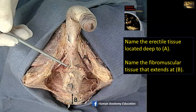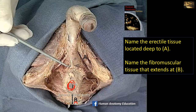Name the erectile tissue located deep to A. The erectile tissue is the crus of the penis. The fibromuscular tissue in B is located in the anal triangle, posterior to the anal canal, extending between the anal canal and the coccyx. This is called the anococcygeal body.